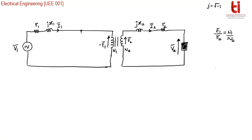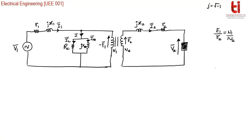To model the core behavior, we place a shunt branch with one reactance and one resistance. This resistance is RC, which is the core loss component. To model the power loss in the core, we use this component and the current flowing through it is IC. Similarly, for magnetization, the component is shown as reactance capital XM, and the current flowing through it is the magnetizing current IM. The sum of both of these is called no load current I0.